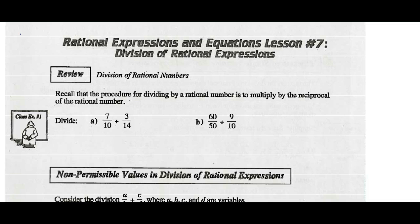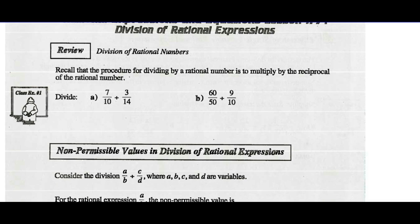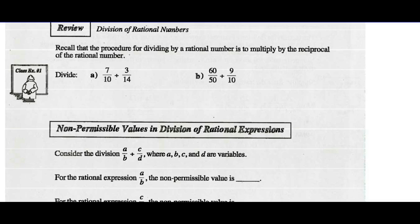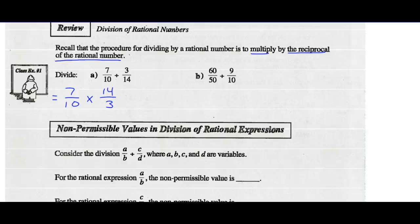So a quick review of dividing rational numbers or dividing fractions. Recall that the procedure for division by a rational number is to multiply by the reciprocal of that rational number. So if I've got 7 tenths divided by 3 fourteenths, what I'm going to do is change division to multiplication and take the reciprocal of that divisor. So 7 tenths divided by 3 fourteenths is like saying 7 tenths multiplied by 14 thirds.